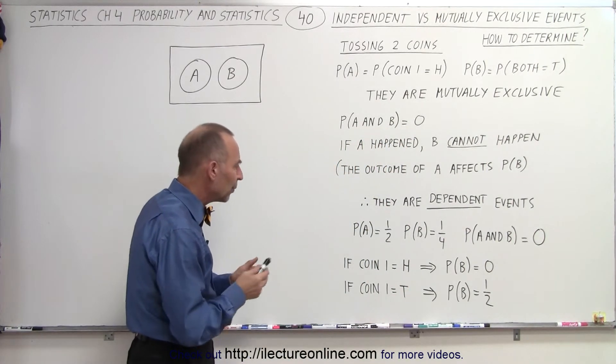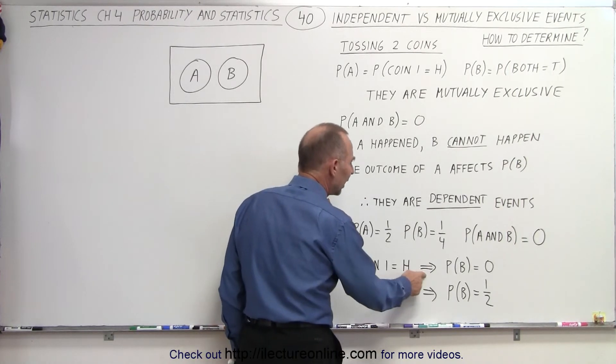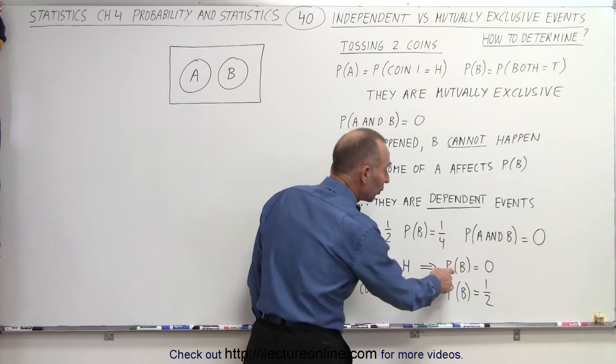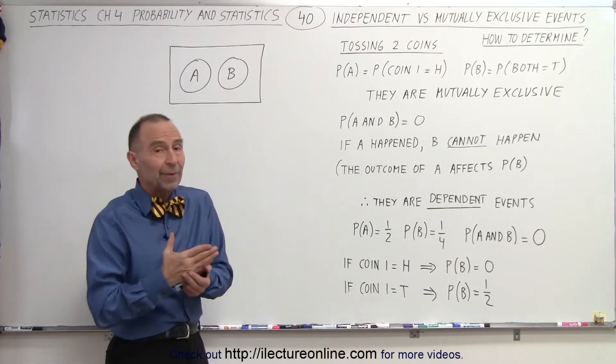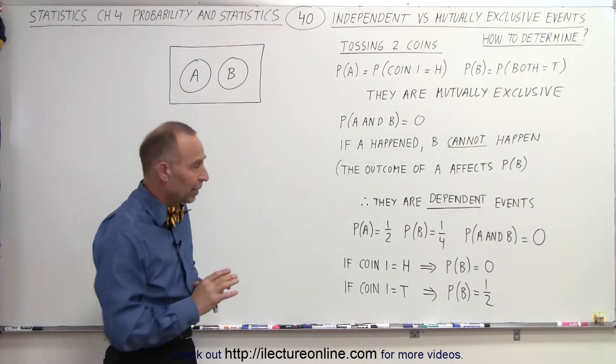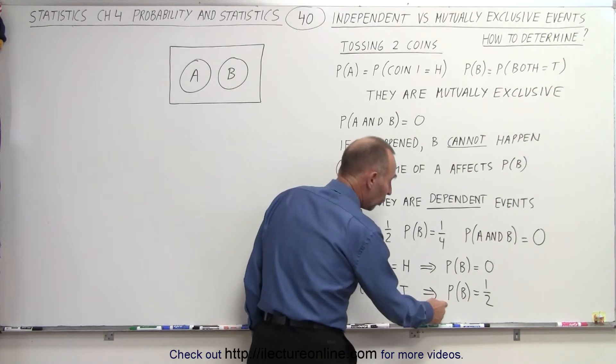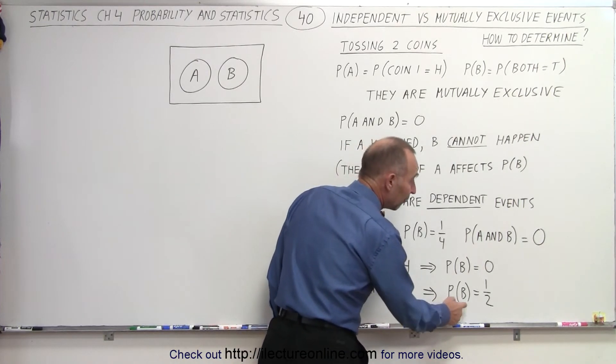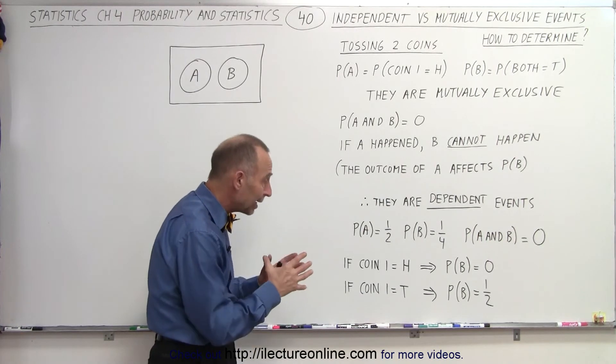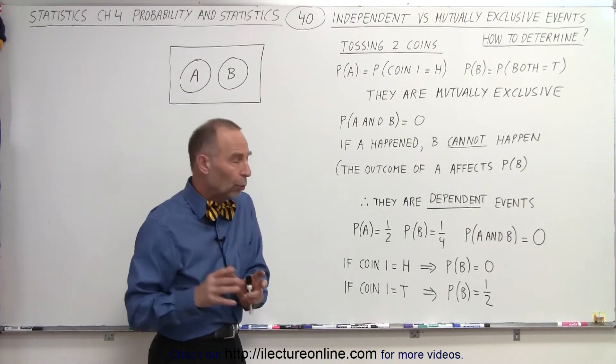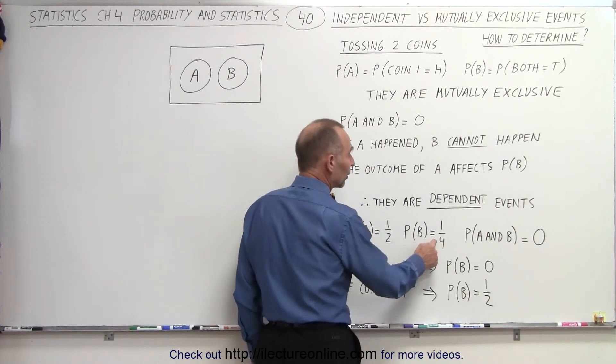But now, let's say that we look at coin one, and we realize that coin one is equal to heads. Then, we know that the probability of B occurring must be zero because once A is heads, the probability of B has to be zero. There's no way they can both be tails. But if coin one equals tails, then the second coin has a probability of being tails half versus half being heads, and therefore combined that the probability of both coins being tails now increases to one-half.